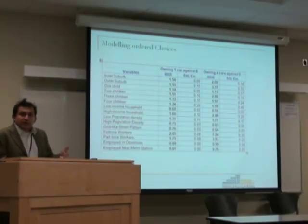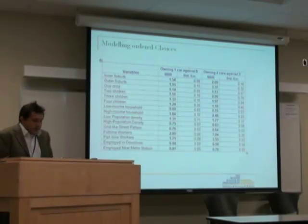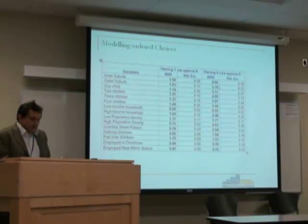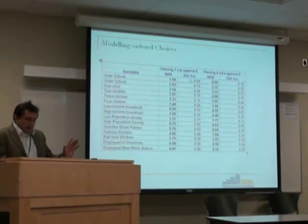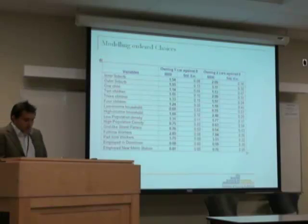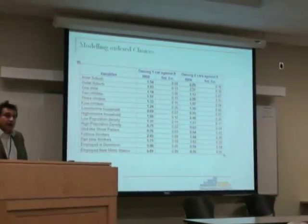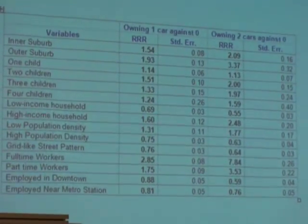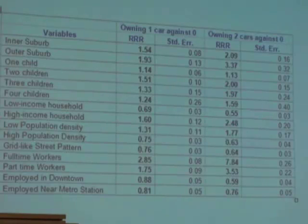Even when we control for demographics, income, household structure, street structure, and so on, these influences remain significant. Notice that the standard errors are very small, telling us that these coefficients are statistically significant. A correction: the values shown are the exponential of the coefficient, so the coefficient itself is smaller. To get the T-statistic, you take the log of this value and divide by the standard error.